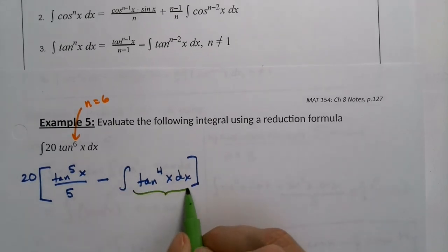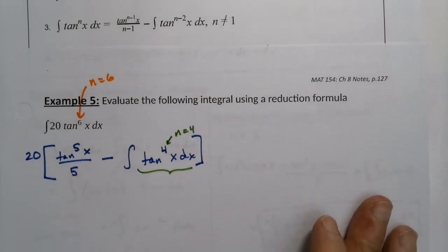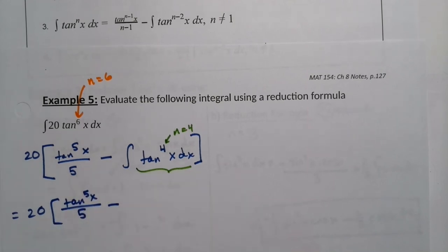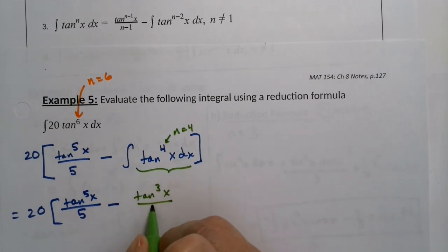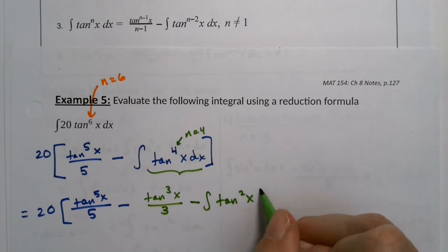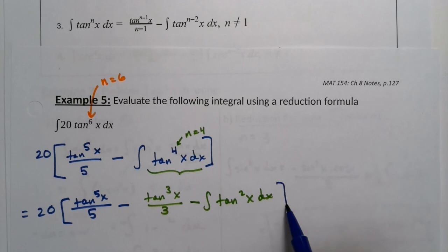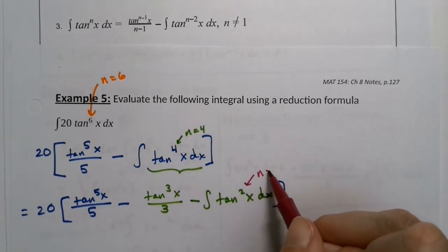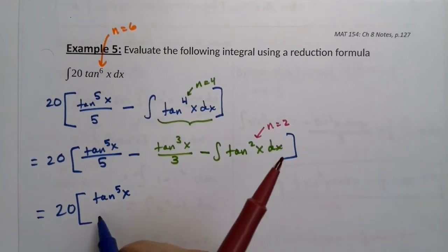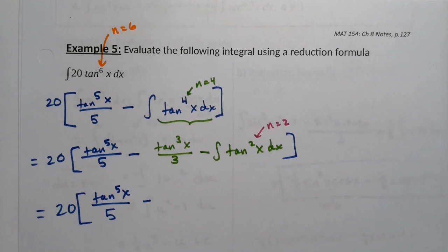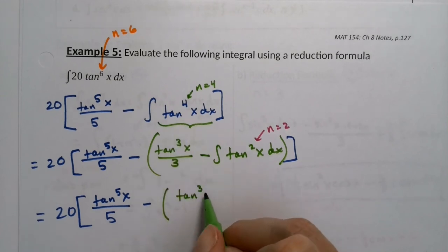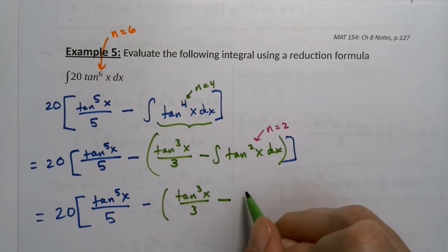Now n is 4, so we apply the rule again. Keeping the 20 and tangent to the fifth over 5, we subtract and apply the formula to get tangent to the third of x over 3, minus the integral of tangent squared of x dx. Applying the rule once more with n equal to 2, this substitutes for the tangent to the fourth, giving minus tangent cubed of x over 3 minus the nested expression inside.